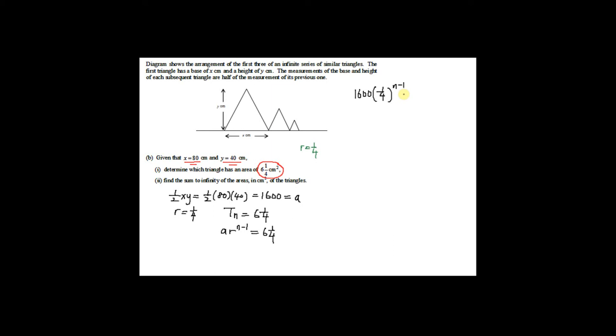The formula for the Nth term of a geometric progression is A·R^(N−1). Setting this equal to 6¼: 1600 × (1/4)^(N−1) = 6¼. Note you cannot combine 1600 and (1/4)^(N−1) directly. Instead, isolate: (1/4)^(N−1) = 6¼ ÷ 1600, which gives 1/256.